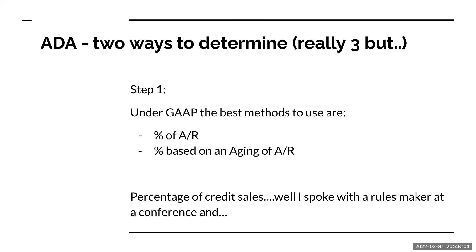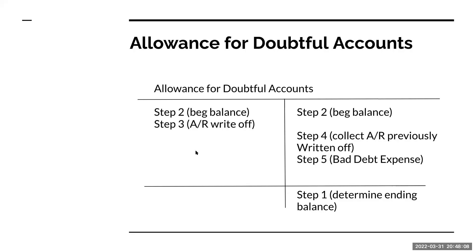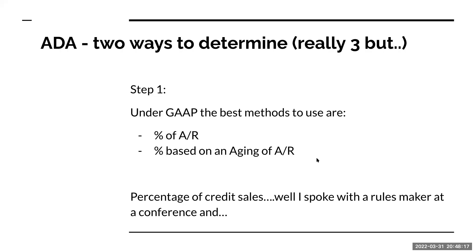Once we have that ending balance, that's going to be our very first step. But we're going to have to go through and analyze the activity going on in this allowance for doubtful accounts, especially in terms of coming up with our bad debt expense.